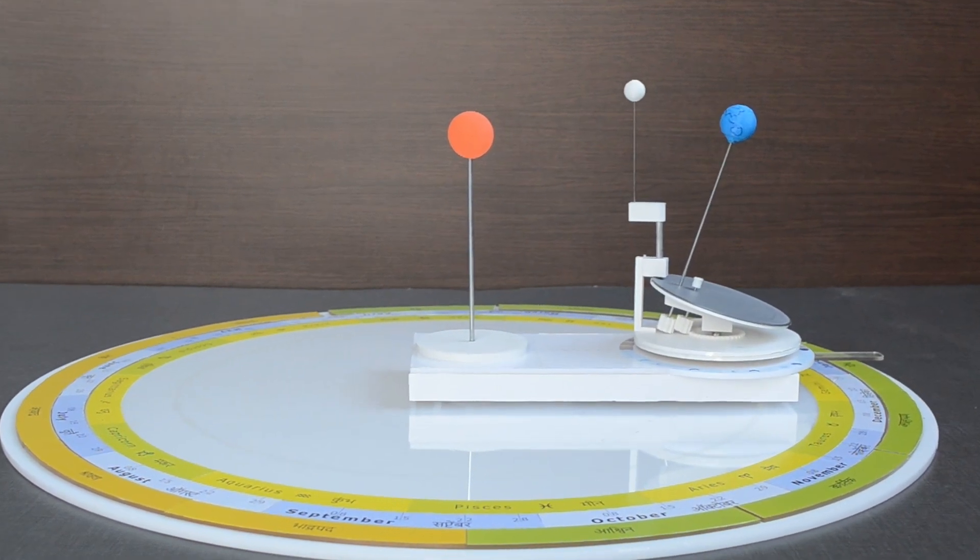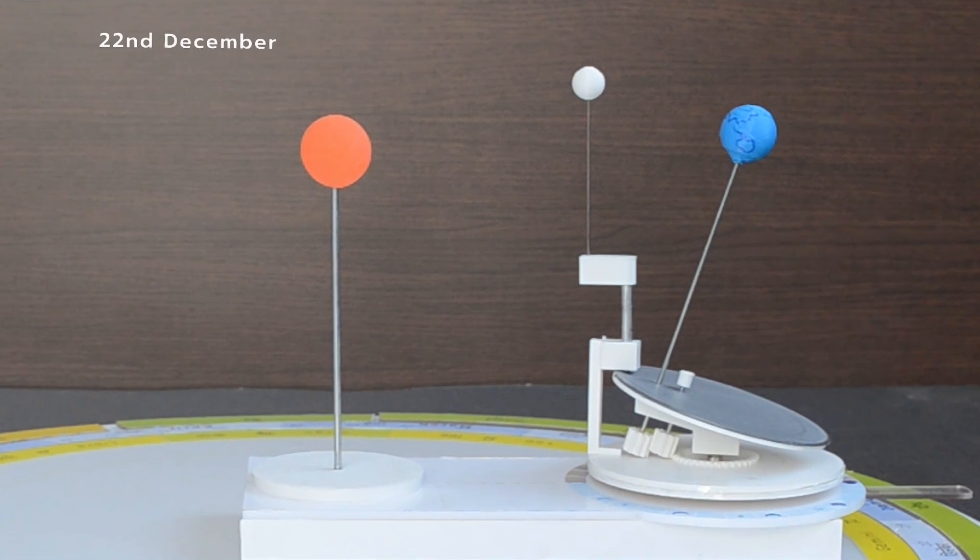On 22nd December, Earth's axis is tilted away from the sun. This is also the start of Pauş month.